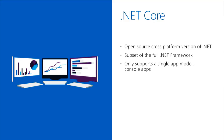You can deploy .NET Core with your app, or it can be installed side-by-side in the user account or machine-wide. If deployed with your app, you only deploy what your application needs, which keeps things running fast and lean. .NET Core only supports a single app model — console apps. That might seem limiting, but as we'll see when we create our ASP.NET Core project, other app models can be built on top of that.